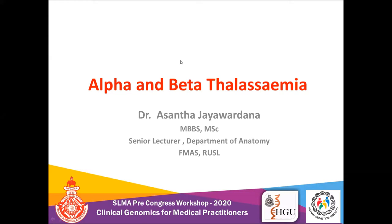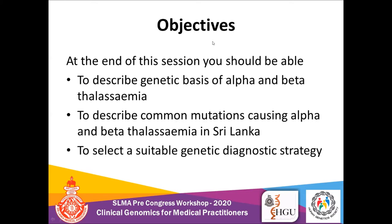Thalassemias are the most common genetic disorder in Sri Lanka and one of the most studied genetic conditions throughout the world, because in certain populations alpha and beta thalassemias are prevalent. These are the objectives for today's presentation: educating about the genetic basis of alpha and beta thalassemias, the common mutations present in Sri Lanka, explaining why certain thalassemic conditions are not present in Sri Lanka, and selecting suitable genetic diagnostic strategies for thalassemias.